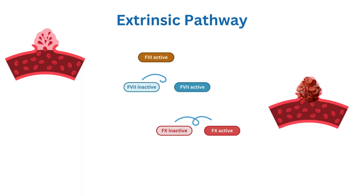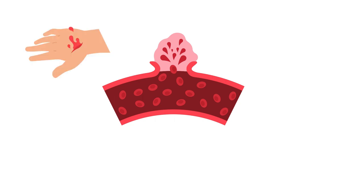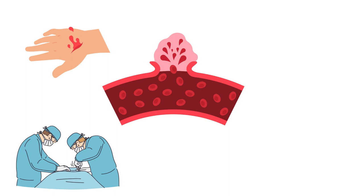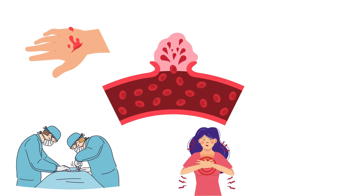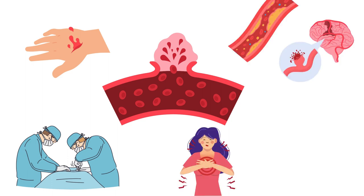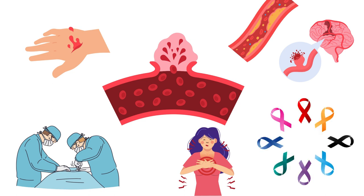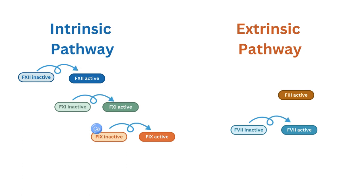Examples of causes that can trigger the extrinsic coagulation pathway include trauma or injury to tissues outside the blood vessel, surgical procedures, inflammatory conditions, and certain diseases or conditions affecting the vascular system, such as atherosclerosis or aneurysms.